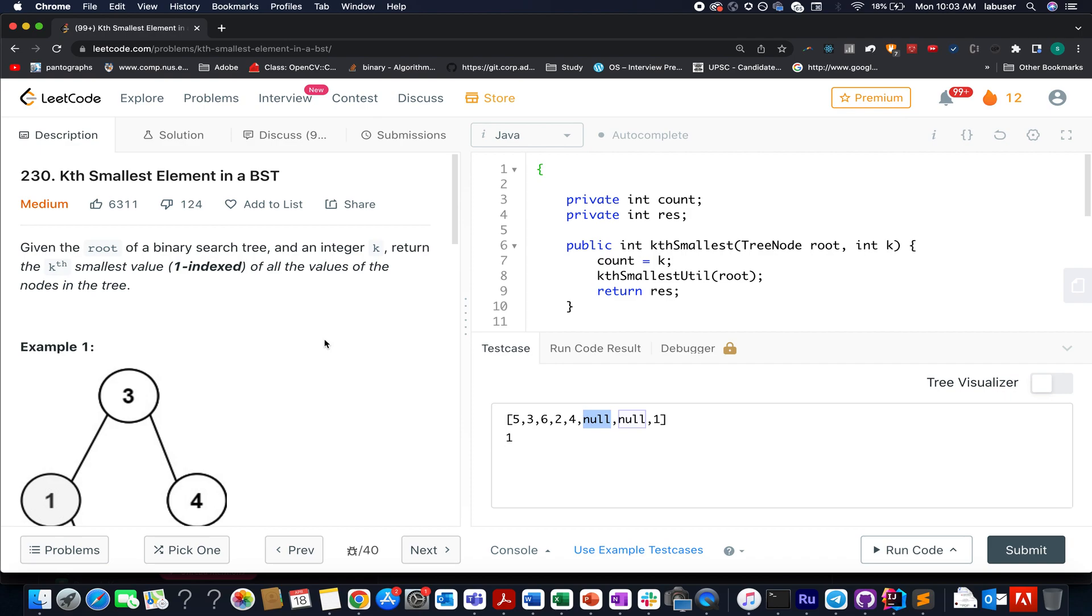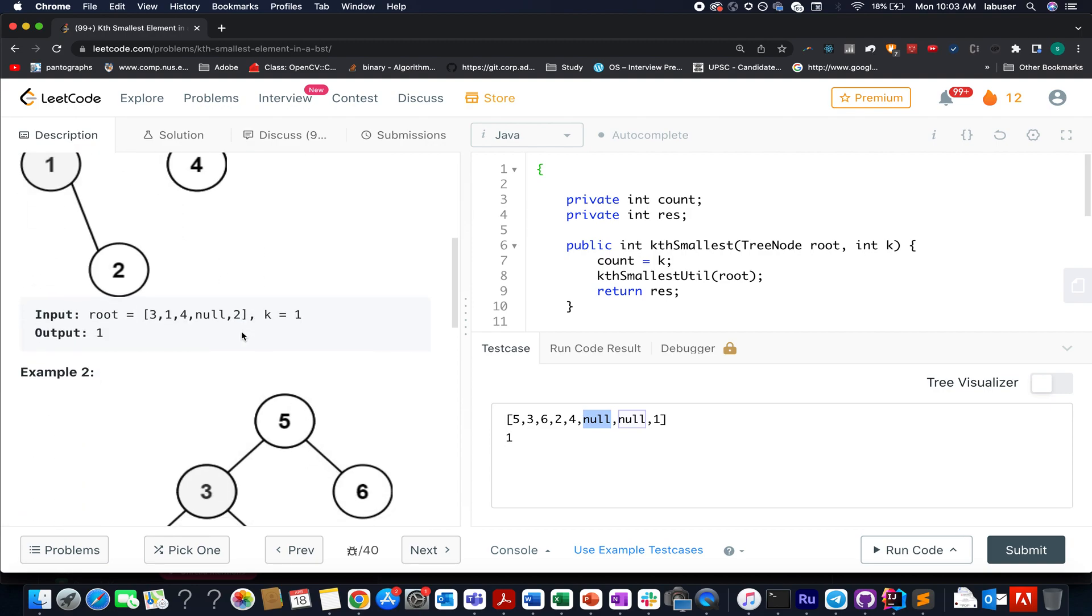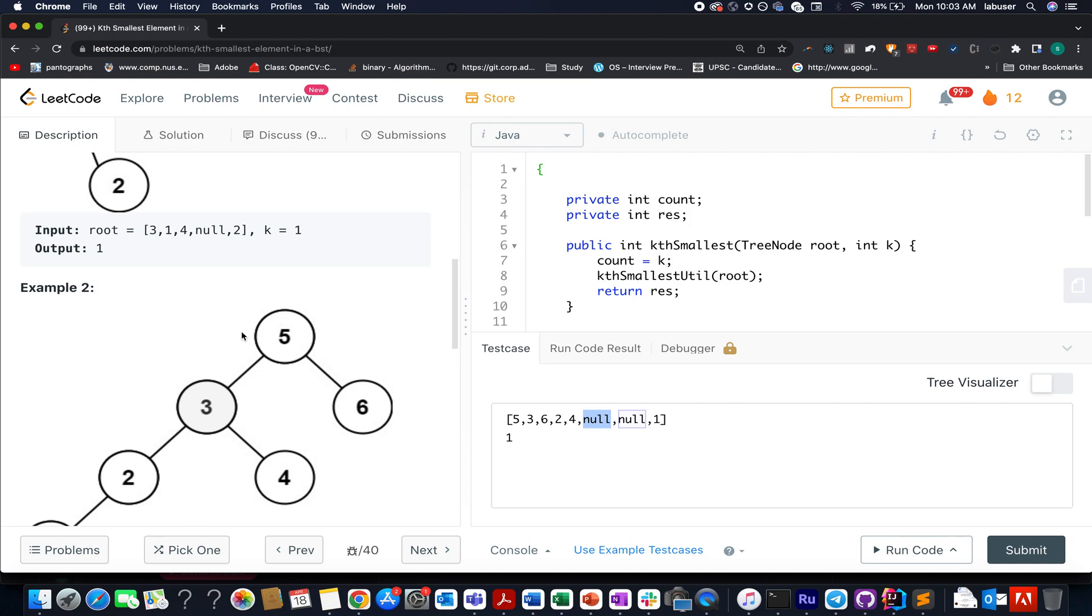The question we have today is kth smallest element in a BST. In this question, we are given a binary search tree and need to identify the kth smallest element that exists in this tree. I'll be walking you through this example and the algorithm with a presentation.